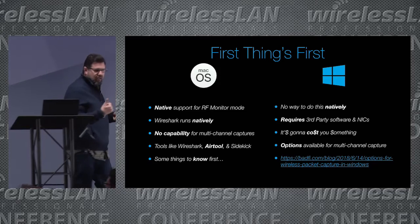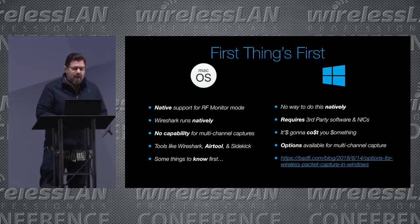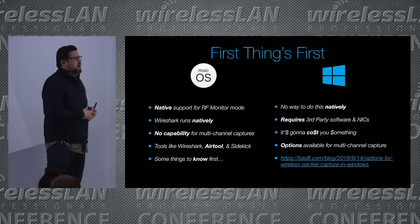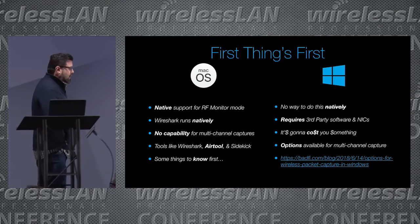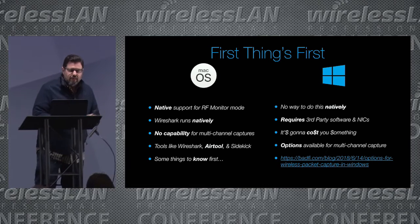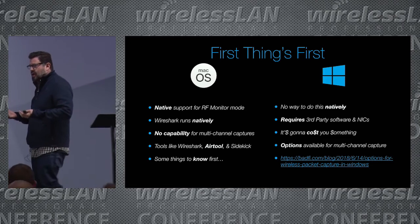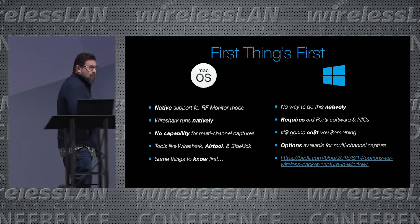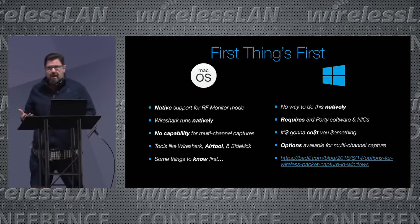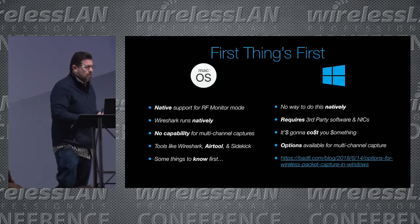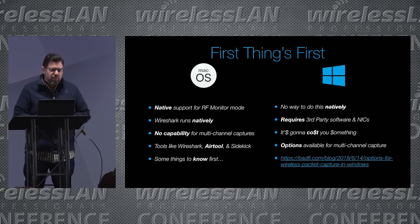Wireshark is available across platforms — Mac OS, Windows, and Linux. On Mac OS it's really easy to do packet captures because it's native, BSD-based. One limitation is that as far as I know there's no native capability to do multi-channel packet captures in OS X. In Windows you do have options to do multi-channel packet captures that you don't have in Mac OS, so there are some limitations there.